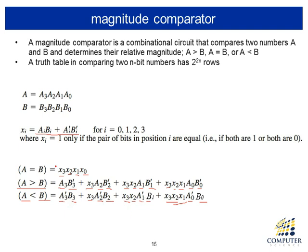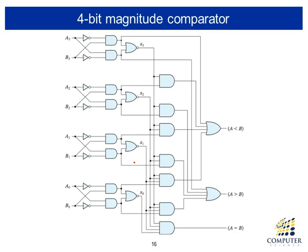So we have three equations for the magnitude comparator: equality, greater than, and less than conditions. Using these equations, we can draw a logic diagram that implements the magnitude comparator circuit, directly constructed from the derived equations.